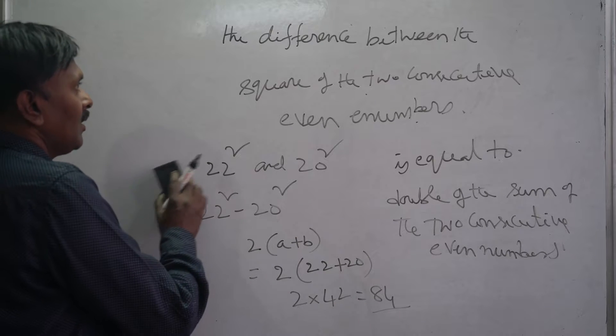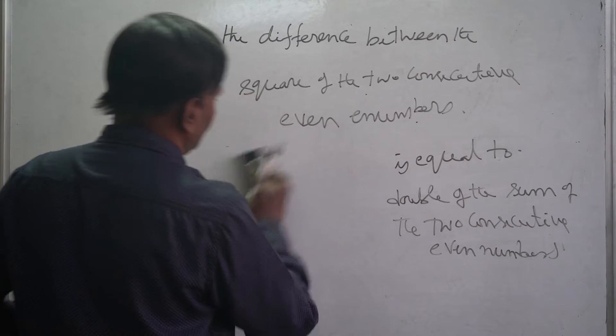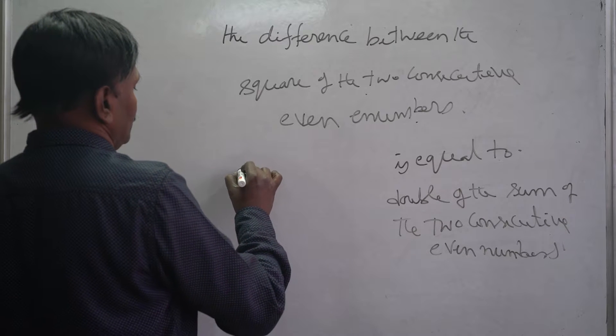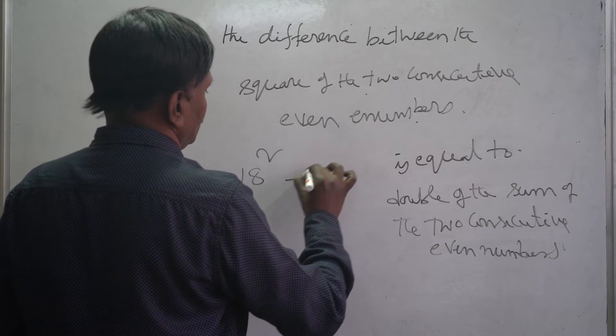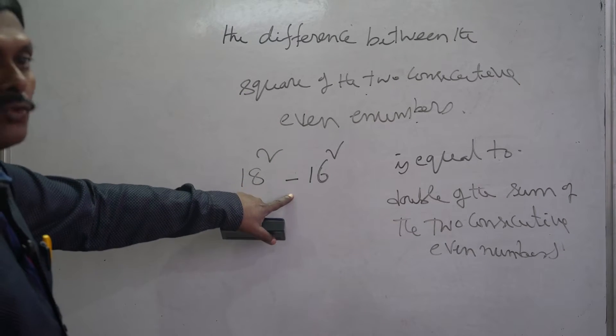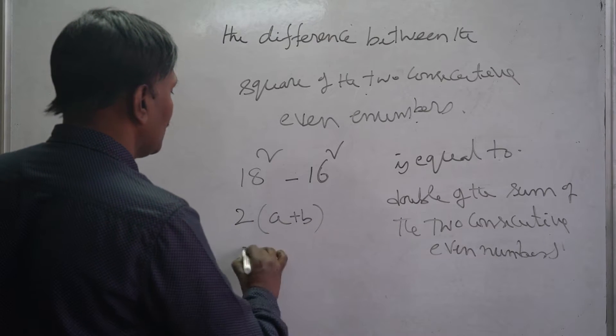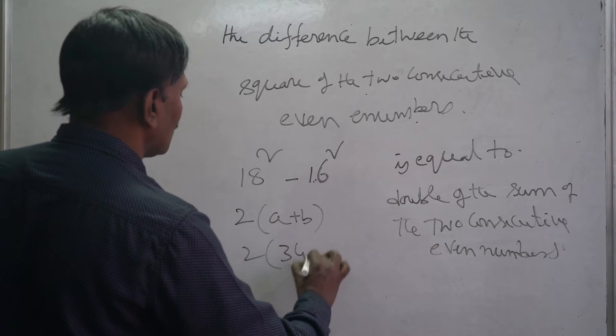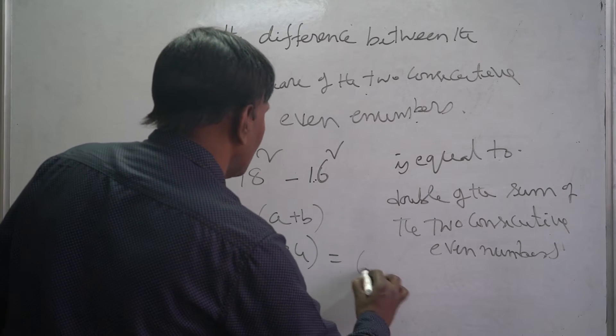Next, if you want, we will take one more example. 18 and 16, two consecutive even numbers. Here what we have to do is 2 into a plus b. This is 2 into 18 plus 16.